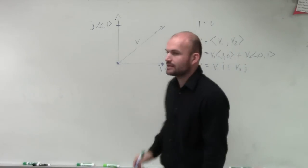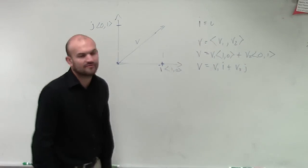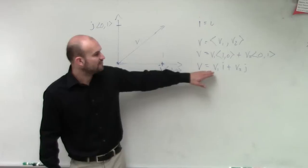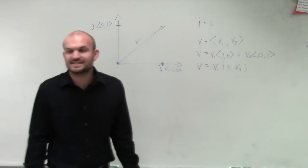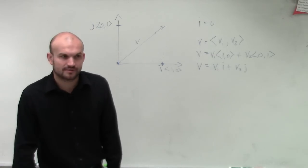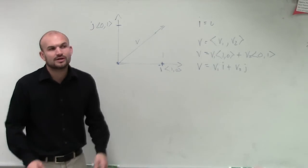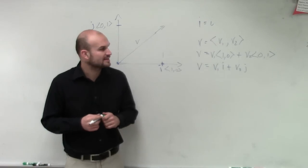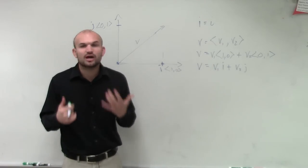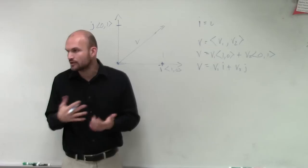So we can rewrite them as v1i plus v2j, where v1 and v2 are going to be your horizontal and vertical scalars of your vector, all right? So this is going to be a linear combination, which we'll get through, of your vectors with dealing with i and j, all right? But it's another way for us to understand how to write vectors.